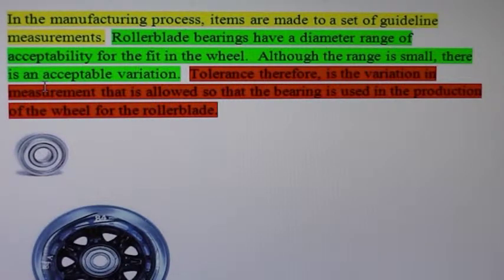For example, there's a lot of measurements for various parts, but let's look at rollerblade bearings. They have a diameter range of acceptability in order to fit into the wheel. Although the range is small, there is an acceptable variation. Tolerance therefore is the variation in measurement that's allowed so that the bearing is used in the production of the wheel for the rollerblade.